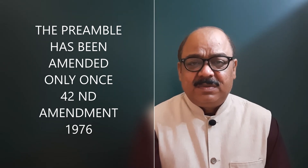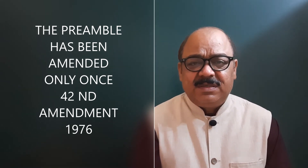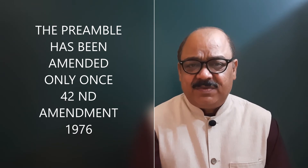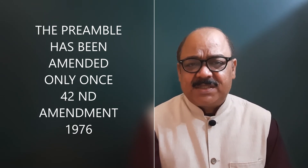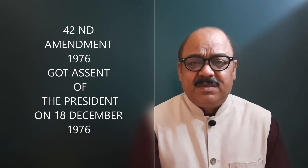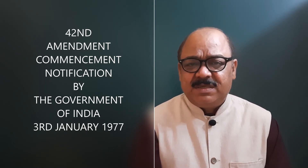That amendment was due to the Kesavananda Bharati versus Government of India case 1973. The amendment took place in 1976 — it is Amendment Number 42, also famous as the mini constitution of India. The 42nd Amendment of the Constitution of India got the assent of the President of India on 18 December 1976, and the notification for its commencement was released by the government of India on 3rd January 1977.